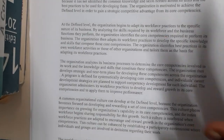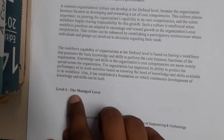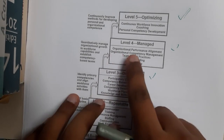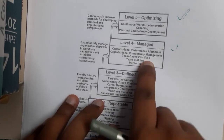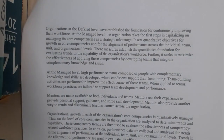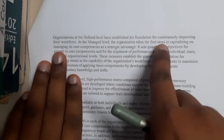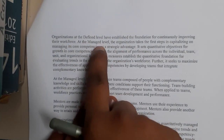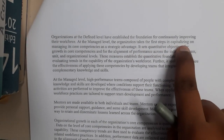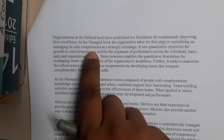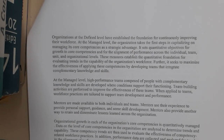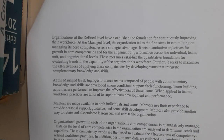The fourth level is Managed. Here everything is managed and performed very properly. Focus areas include organizational performance alignment, organizational compatibility management, team-based practices, team building, and mentoring. Organizations at the Defined level have established the foundation for continuous improvement of their workforces. At the Managed level, the organization takes the first step in capitalizing on and managing its core competencies as strategic advancements.